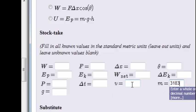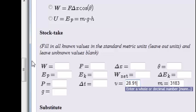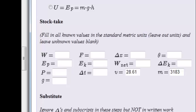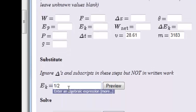We know our velocity is 28.61, and then substituting we get a half times mass of 3,183 times 28.61 squared. Preview.